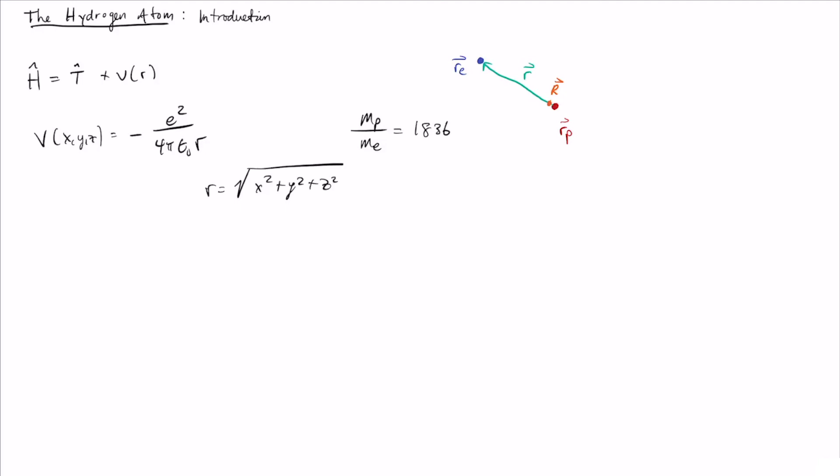In this expression, little e is the charge of an electron or the charge of a proton—it's the fundamental unit of charge, which are both the same for electrons and protons. There's a minus sign because this is an attractive potential. A positive proton and a negative electron have an attraction, and so the energy that you get for this process is negative.